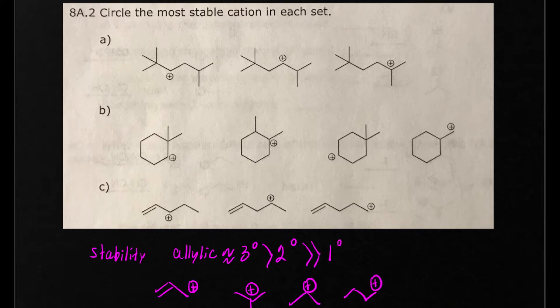I should mention that vinyl carbocations are very unstable and they might look like this where you have the actual positive charge right on the alkene carbon. So let's analyze these.